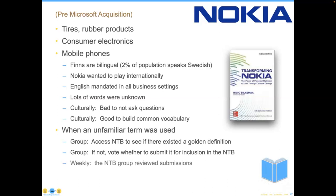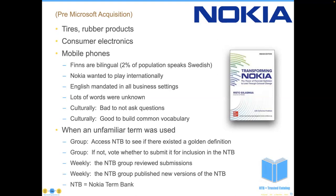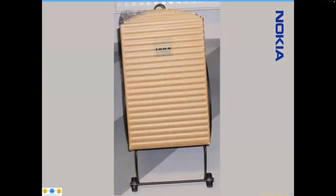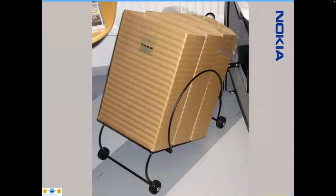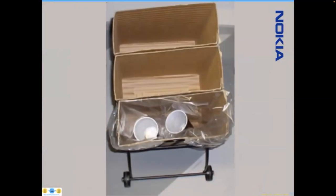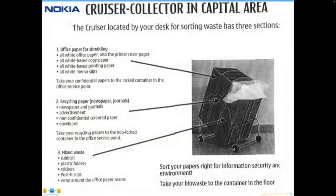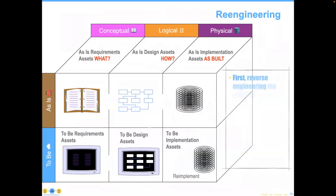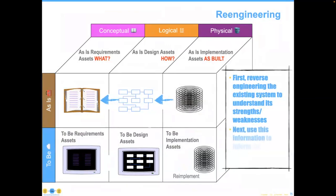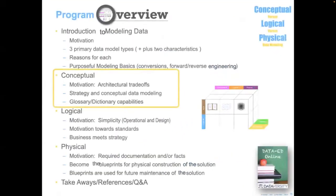The new versions were published as a single web page, and the only access mechanism was getting access to the page and using its search function — about as inexpensive as you can come up with. The Nokia term bank was a wonderful experience. We were curious about something in many of the offices and asked — they said it was their cruiser collector, and handed us a 50-page document describing it in much more detail than they had about any of the data models we were there to discuss. Remember, we're reverse engineering something of an existing system, then using that information as part of the to-be design.